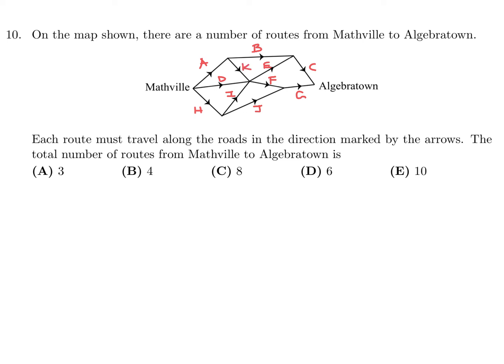And then I just manually counted it. So I said, how do I get from Mathville to Algebra Town? Well, one is A, B, C. That's one way. Another way is A, K, E, C. Another way is A, K, F, G. Well, that exhausts the A's. Then I gotta go through the D's. D, E, C, D, F, G. And I think that exhausts the D's. Now I gotta go through H. H, J, G, H, I, E, C, and H, I, F, G. And I think that's it. And that's a total of eight. Therefore, Number 10 is C. Thank you.